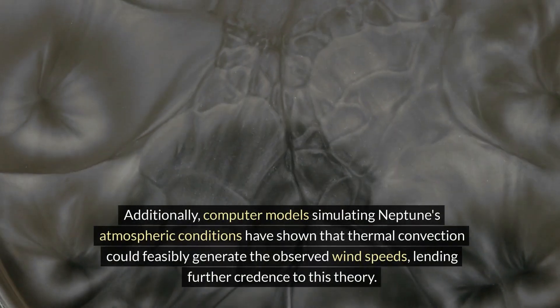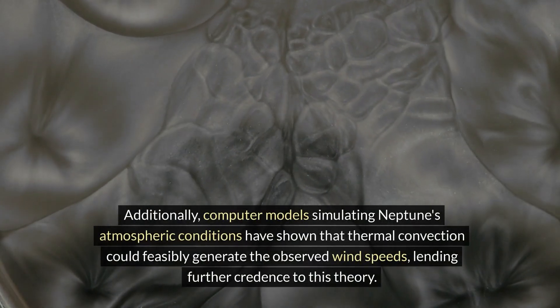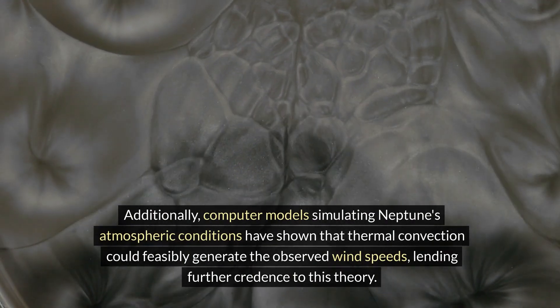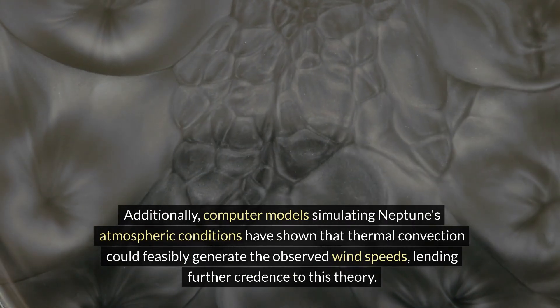Additionally, computer models simulating Neptune's atmospheric conditions have shown that thermal convection could feasibly generate the observed wind speeds, lending further credence to this theory.